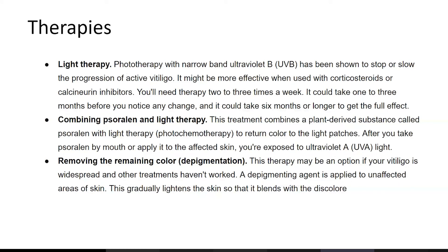Combining psoralen and light therapy: this approach combines a plant-derived substance called psoralen with light therapy to return color to patches. You take psoralen by mouth or apply it to the affected skin, then are exposed to ultraviolet A light. For depigmentation therapy, a depigmentation agent is applied to unaffected areas of skin, gradually lightening the skin so that it blends with the discolored patches. This may be an option if vitiligo is widespread and other treatments haven't worked.